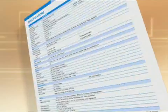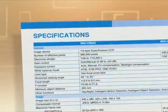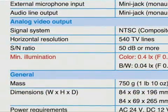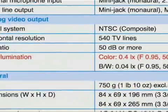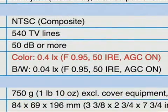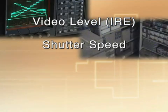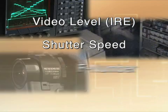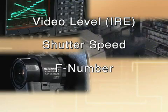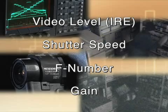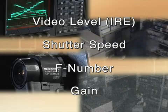Sony brochures clearly state the parameters that were used when measuring minimum illumination. Video level, shutter speed, F number, and gain all affect the minimum illumination value.